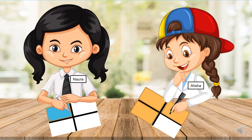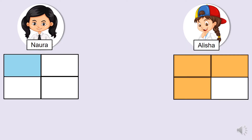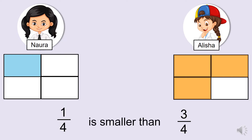Nowra and Alicia are colouring. The A4 papers that they are colouring are divided into four equal parts. Nowra managed to colour one out of the four parts, and Alicia coloured three out of the four parts. Who coloured more? Obviously, Alicia coloured more and Nowra coloured less. Hence, the fraction 1 over 4 is smaller than 3 over 4. Remember, the alligator mouth opens up to the bigger fraction, so we use this alligator mouth.